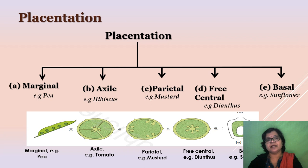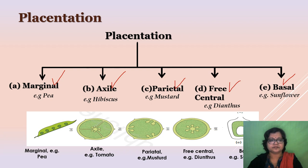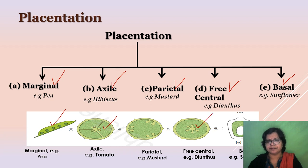In this video we have learned the parts of the gynoecium and placentation — its definition and the different types. Marginal: placenta forms a ventral ridge and ovules are present in two rows. Axile: ovules attached to the central axis in a multilocular ovary. Parietal: ovules attached to the inner wall at the peripheral side of the ovarian wall. Free central: ovules attached freely to the central axis without any chambers. Basal: placenta develops at the base of the ovary with a single ovule attached.